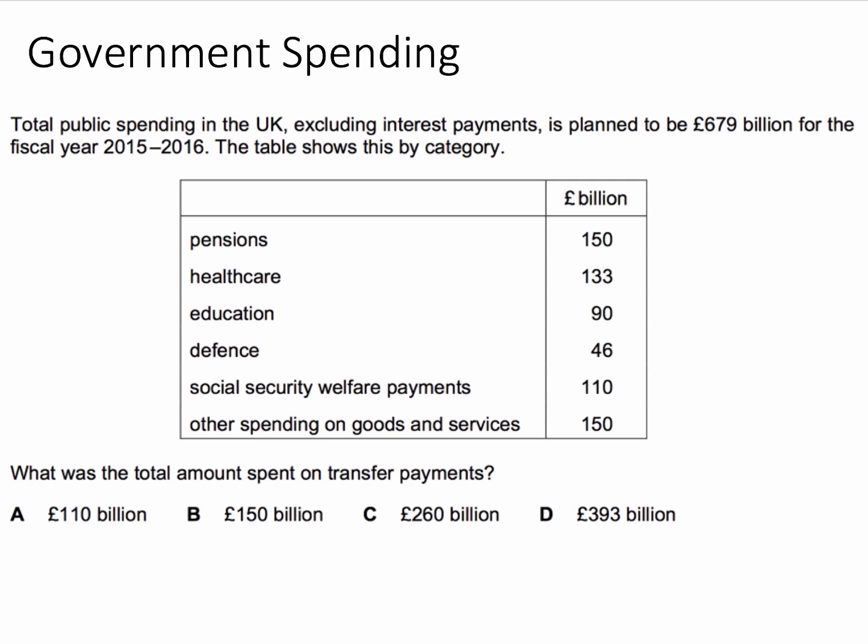Total spending by the government in the UK is planned to be £679 billion for the 2015-2016 fiscal year. The table shows a breakdown of government spending by major category, and the question is: what was the total amount spent on transfer payments?